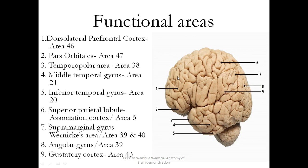Now we have the dorsolateral prefrontal cortex, this part number 1, and this is area 46. It is part of the cognitive centers of the brain. Then this is the pars orbitale, which is area 47, and it is not considered to be part of Broca's area.